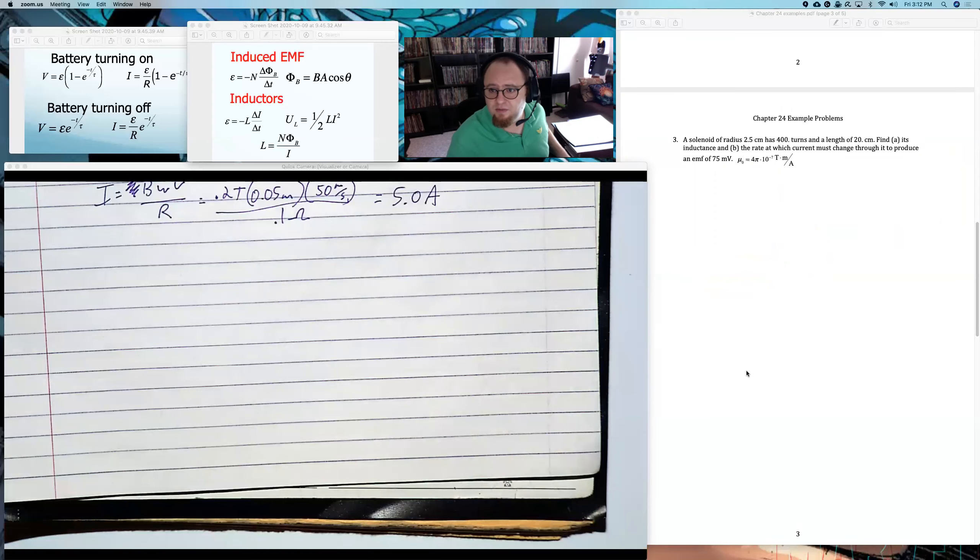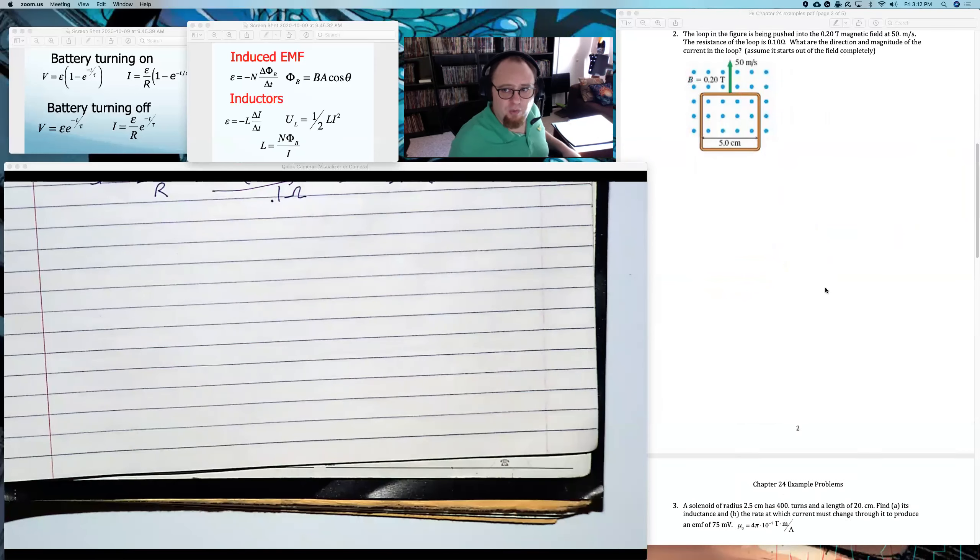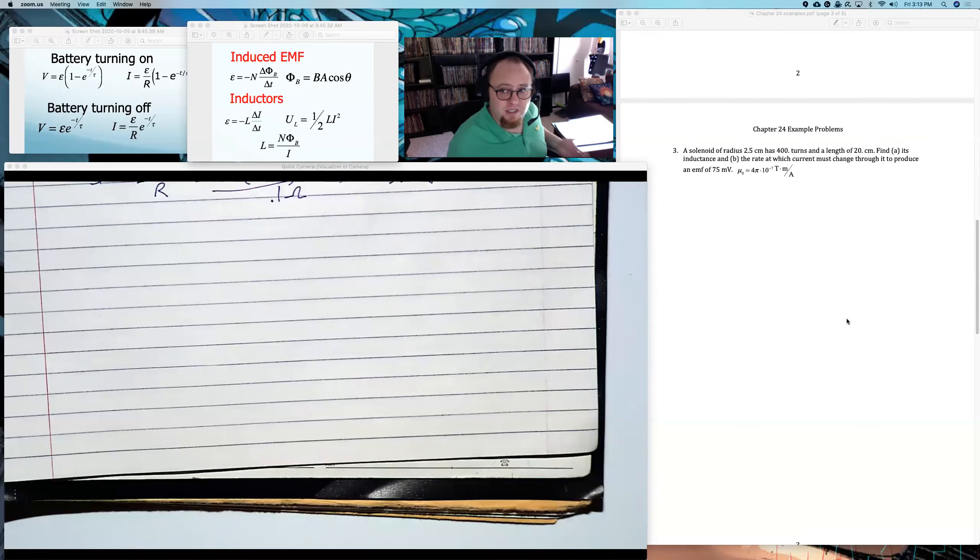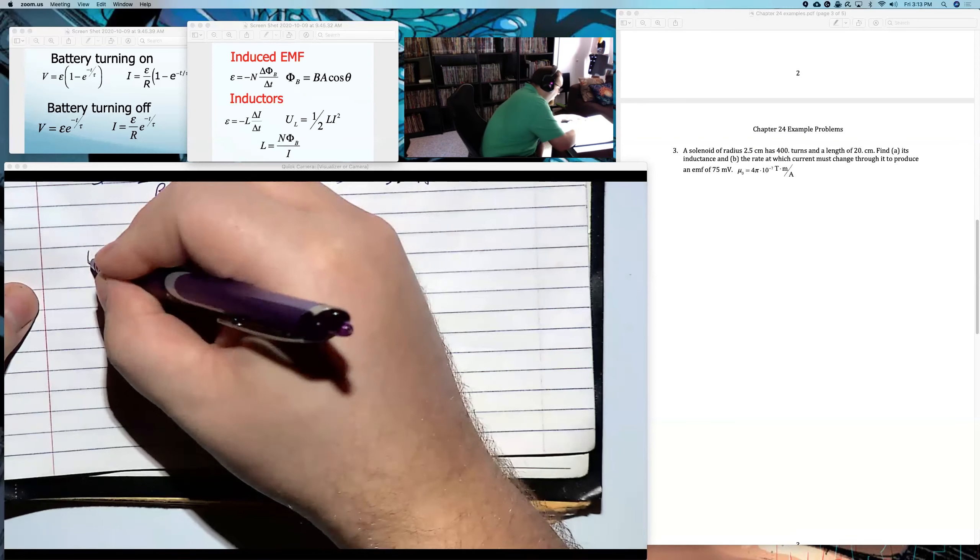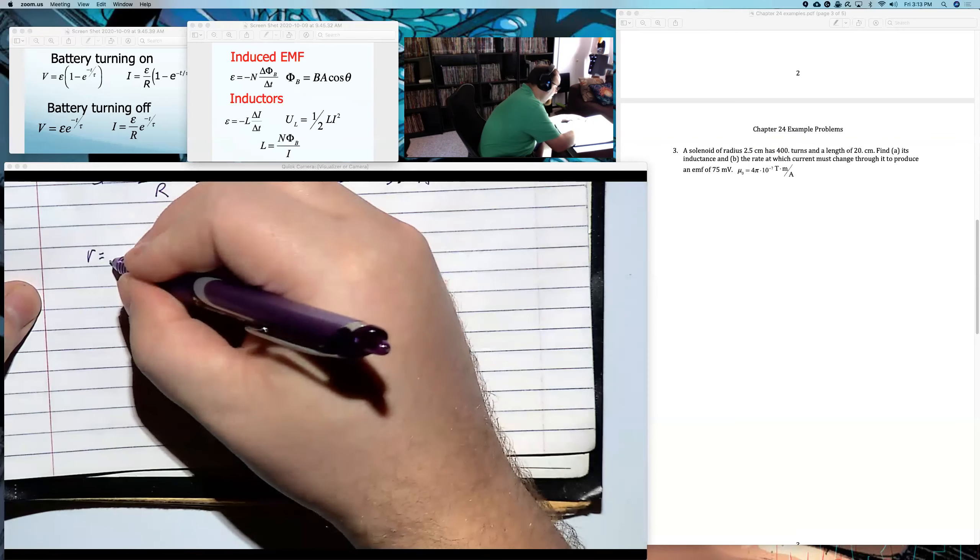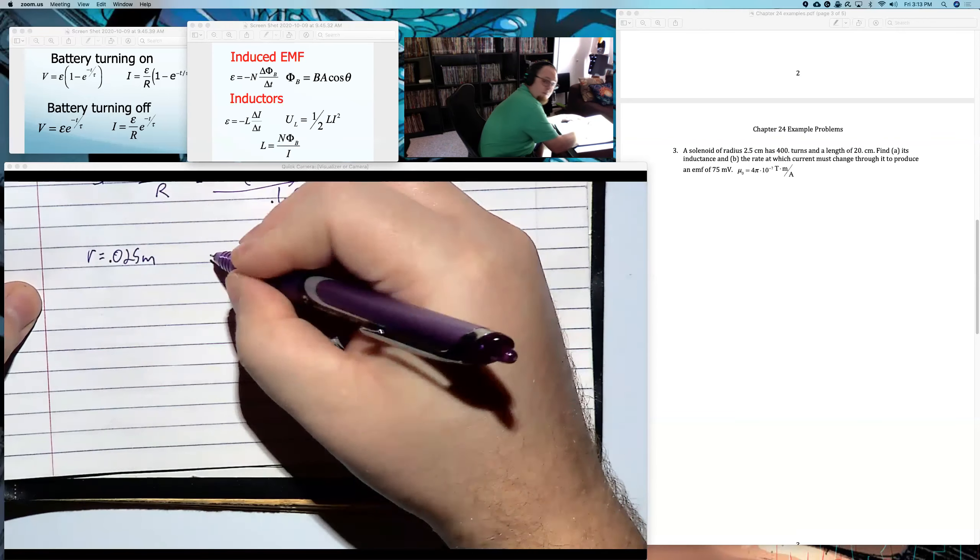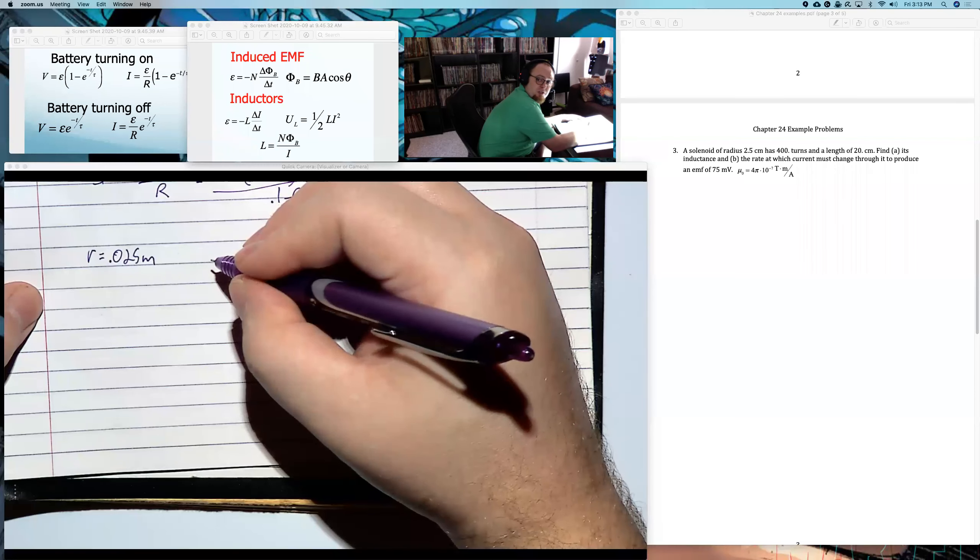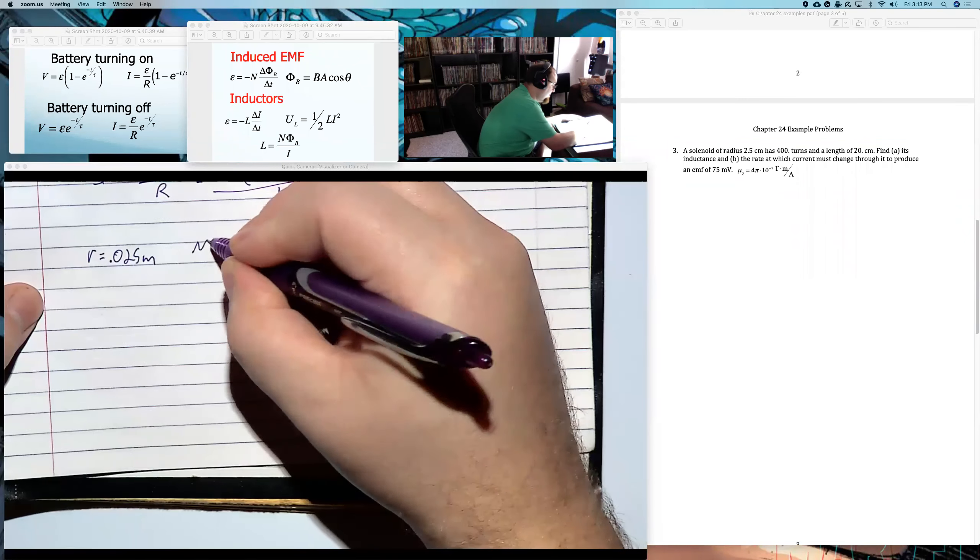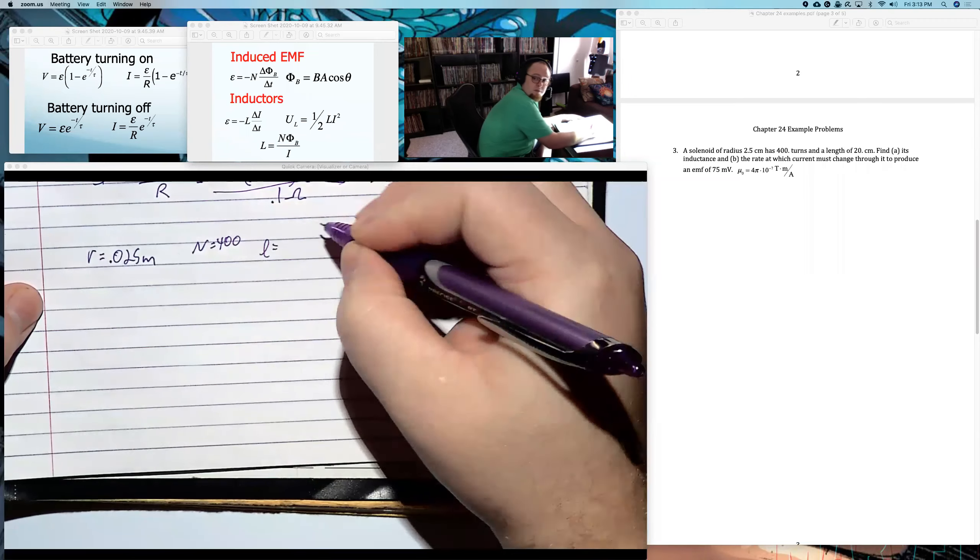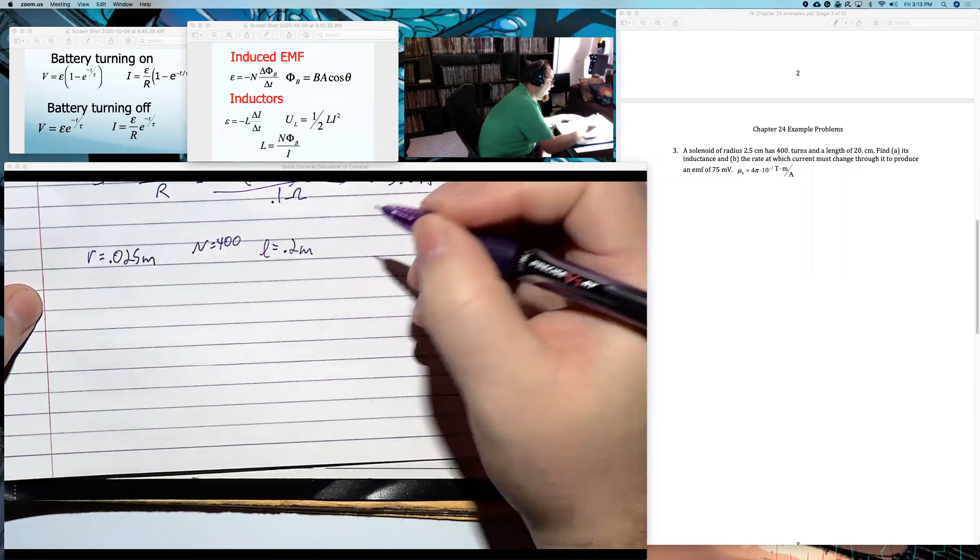Oh, never mind. This is actually the same thing. No, this is inductance. Okay. Because if we want to make something that does this, if we want to create something that induces EMF, that's what an inductor is, right? An inductor is something purposely going out of their way to induce EMF. And so we can talk about the inductance of a set thing. So this guy here says we have a solenoid. And this solenoid has a radius of 2.5 centimeters or 0.025 meters and has 400 turns and a length of 20 centimeters, 0.2 meters.